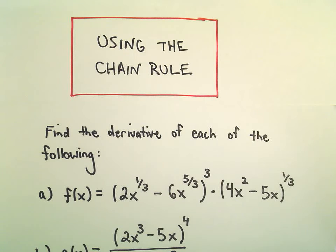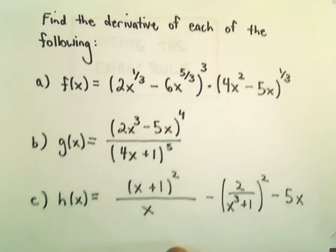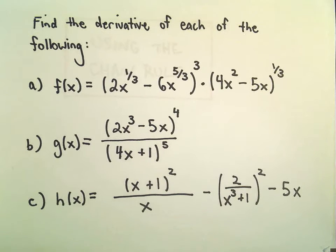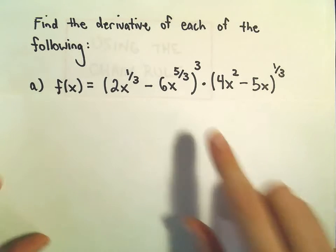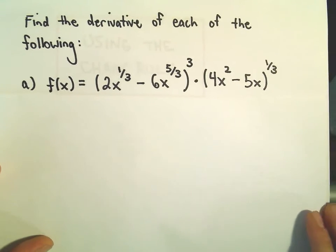In this video we're going to do some more examples of finding derivatives using the chain rule. In part A we'll find the derivative of 2x to the 1/3 minus 6x to the 5/3, all of that cubed, times 4x squared minus 5x to the 1/3 power.